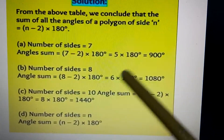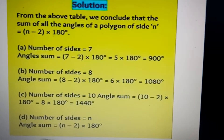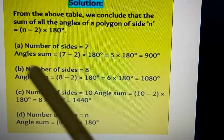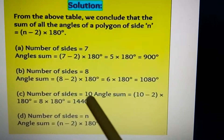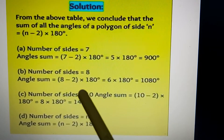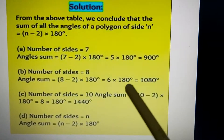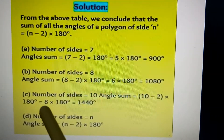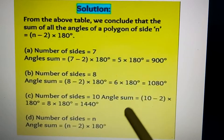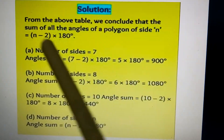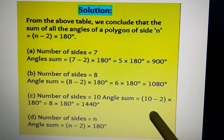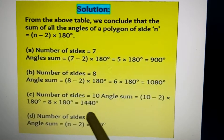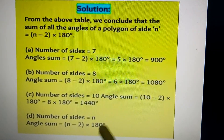For number of sides equal to 8: eight minus two into 180 degrees — eight minus two equals six, so six into 180 degrees equals 1080 degrees. For number of sides equal to 10: ten minus two into 180 degrees — ten minus two equals eight, so eight into 180 degrees equals 1440 degrees.